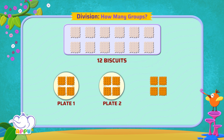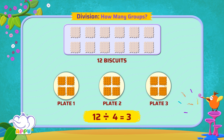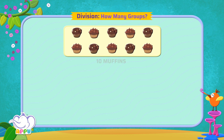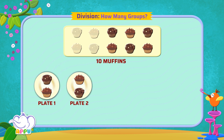...four biscuits in each plate. How many plates will Tiger need? It is easy. So Tiger will need three plates. 12 biscuits divided by four equals three plates. Excellent!